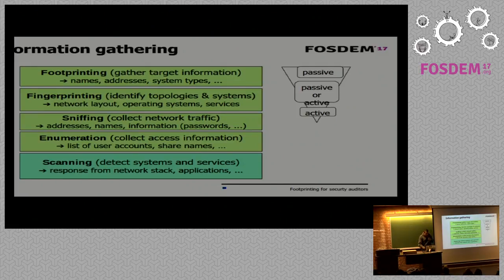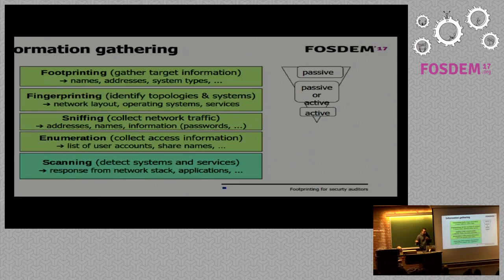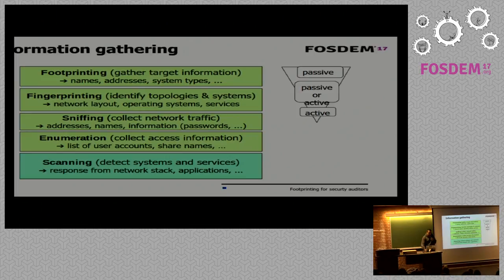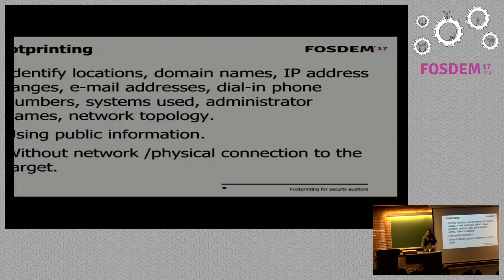There are other phases similar to footprinting. Fingerprinting is like footprinting but oriented to obtain, for example, the topology of a network or the operating system and services running on a specific server. There is also classical sniffing for collecting network traffic, and scanning, which I will comment on later when discussing the Nmap tool.